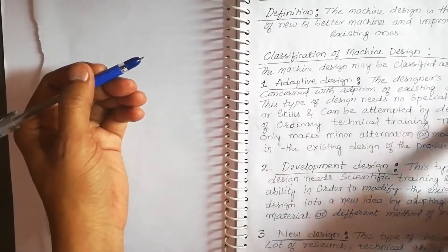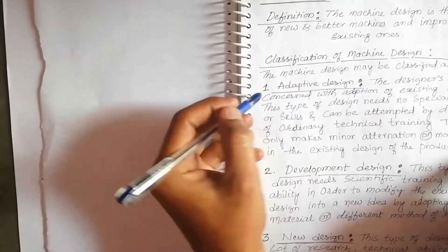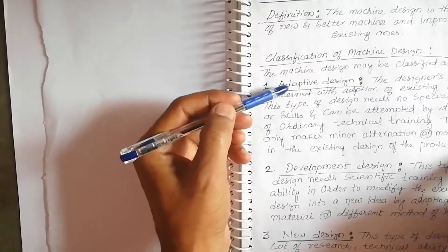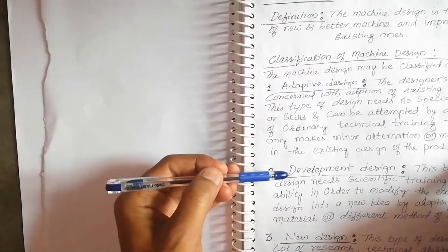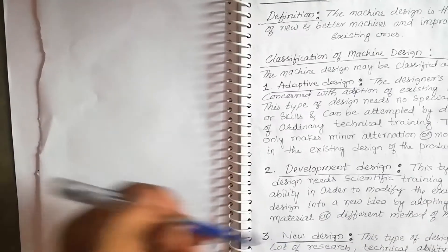Now, the classification of machine design. Machine design can be classified into three types: one is adaptive design, second is development design, and third is new design.